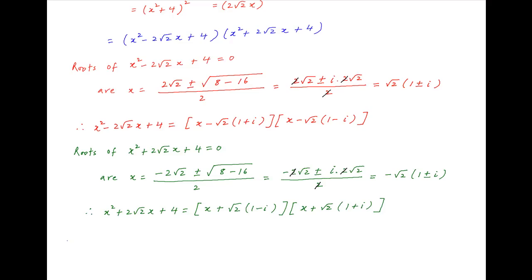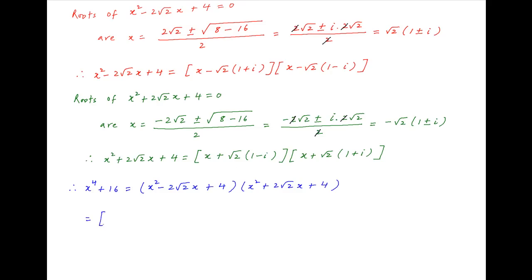Therefore the given expression x⁴ + 16, which equals (x² - 2√2·x + 4)(x² + 2√2·x + 4), factorizes into the four linear polynomials: (x - √2(1+i))(x - √2(1-i))(x + √2(1-i))(x + √2(1+i)).